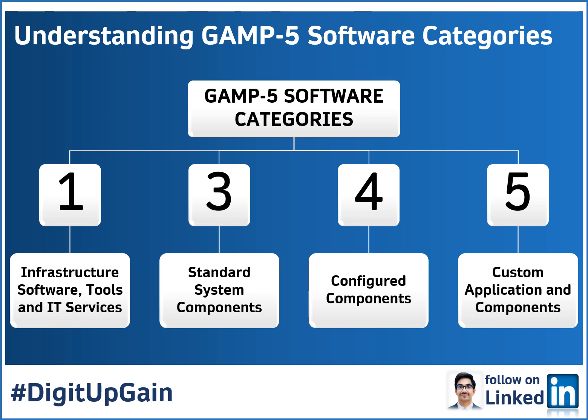When it comes to GAMP 5, software systems are classified into four categories: Category 1 infrastructure, Category 3 standard system, Category 4 configured products, and Category 5 custom applications.